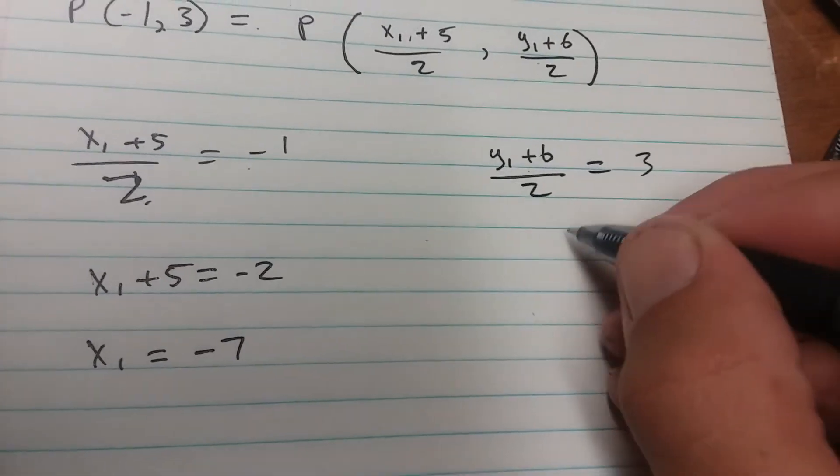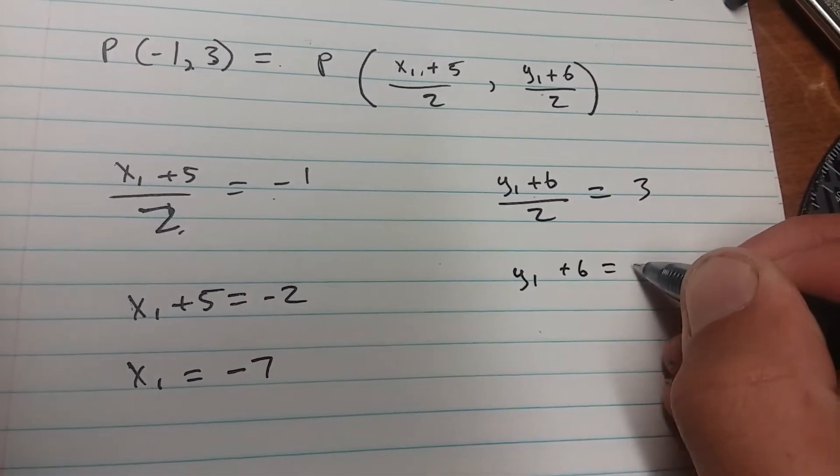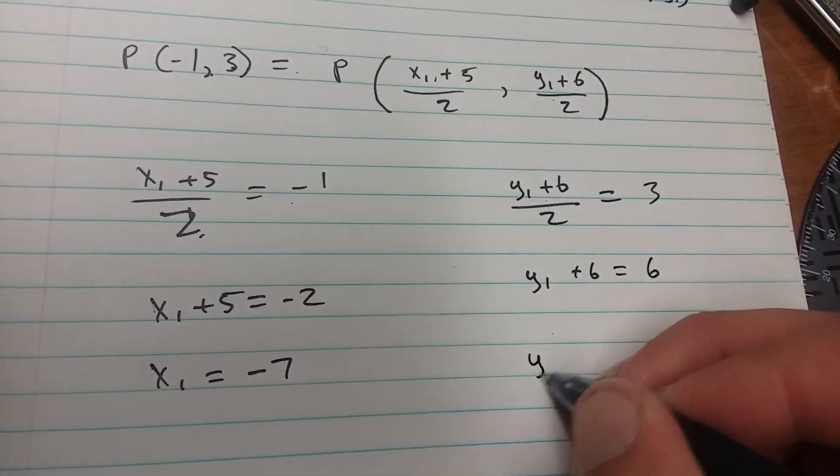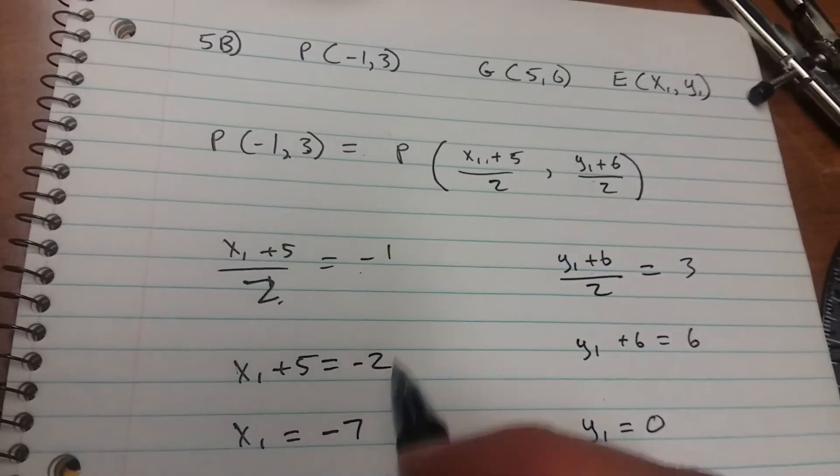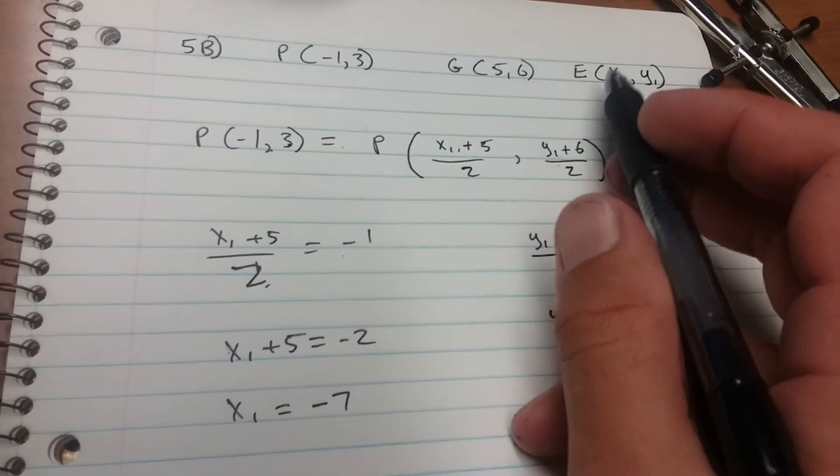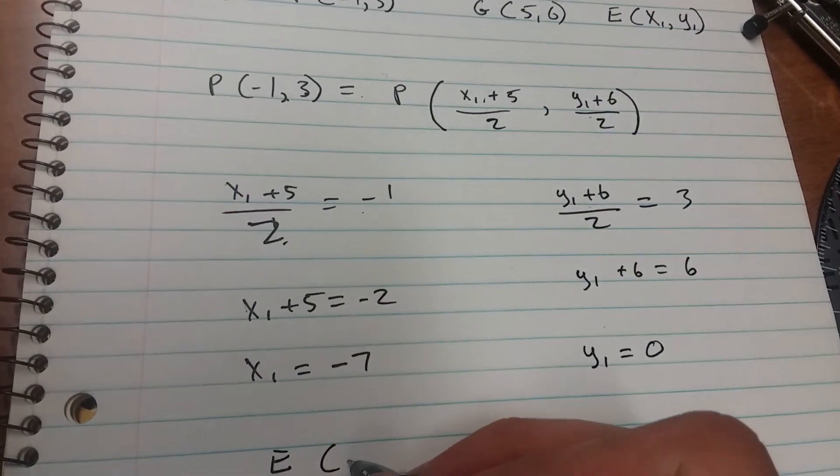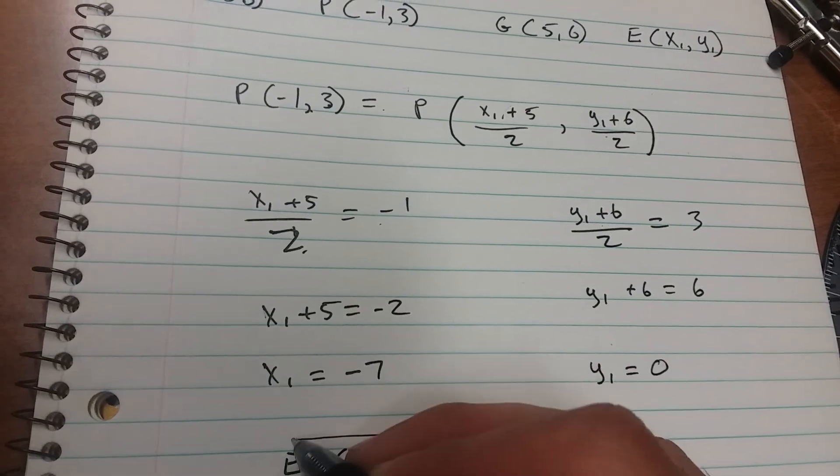Multiply both sides here by 2. y₁ plus 6 equals 6. Subtract 6 from both sides, y₁ equals 0. All right, so that means that our point E is located at negative 7, 0.